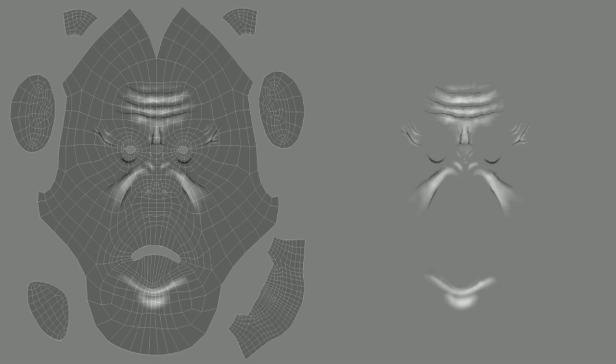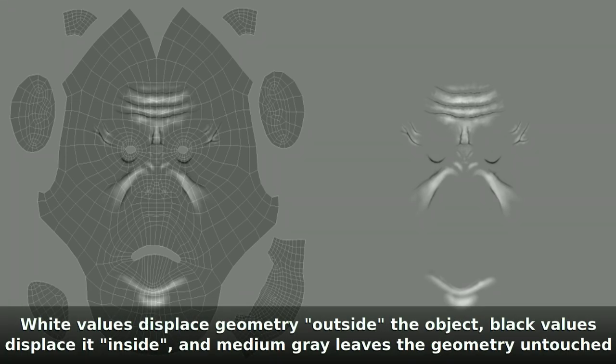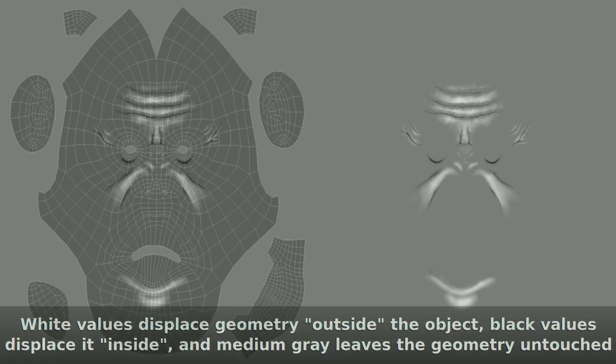Displacement maps are grayscale images where color black displaces the geometry inside the mesh, creating creases. White displaces the mesh to the outside, creating bulges, and the medium gray tone means no change. To apply these maps to our model, we need to unfold the surface into a UV layer. I'm using two UV layers: one that focuses on the facial area with the rest of the head minimized, and another layer to map the rest of the textures.